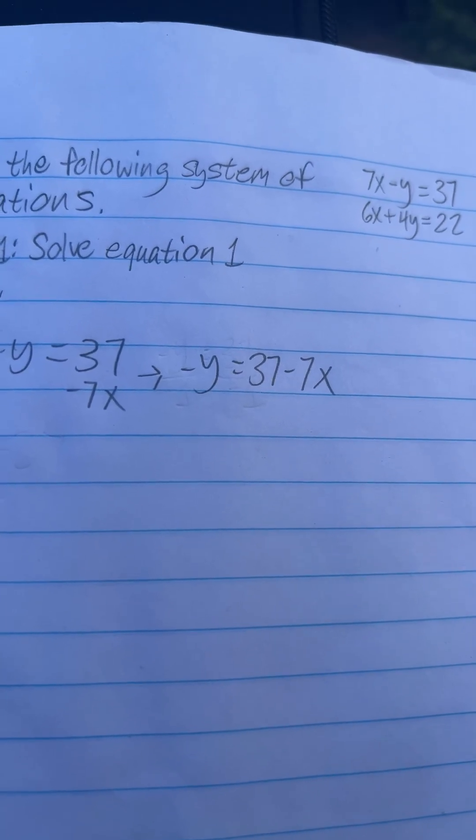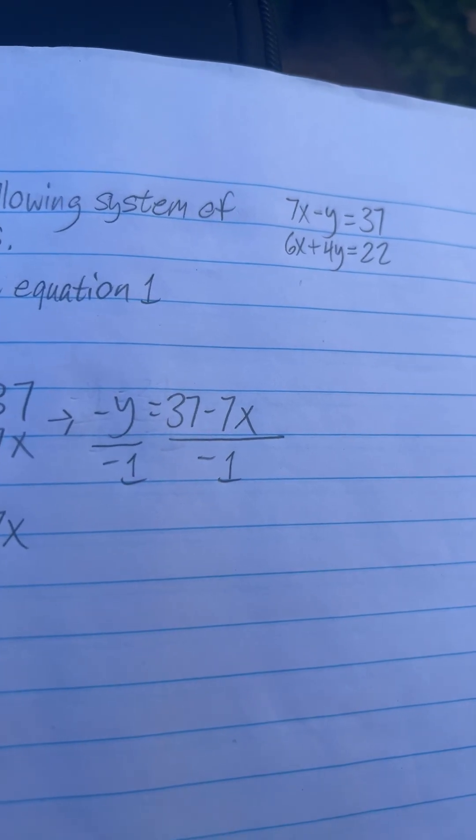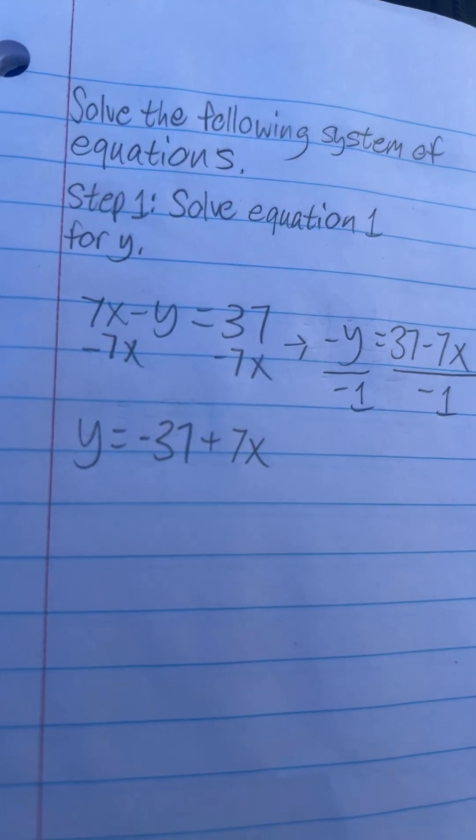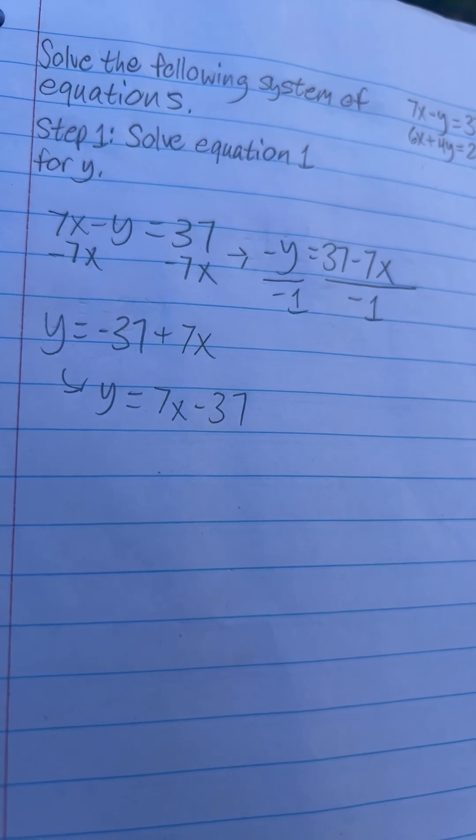This ain't good enough. We want to isolate it all the way. Remove that negative sign. So divide both sides by negative 1 to get y equals negative 37 plus 7x. And that's the same thing as y equals 7x minus 37.